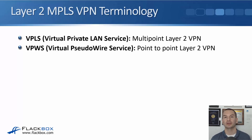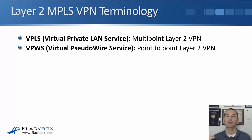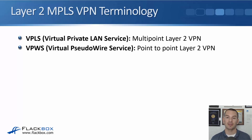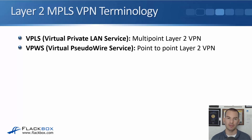Some terminology for Layer 2 MPLS VPNs: VPLS is Virtual Private LAN Service — this is a multi-point Layer 2 VPN used when you have more than two sites all in the same IP subnet. VPWS is Virtual Pseudowire Service — that is a point-to-point Layer 2 VPN used when you have only two sites. Both work the same way; the difference is VPWS covers two sites while VPLS covers more than two.